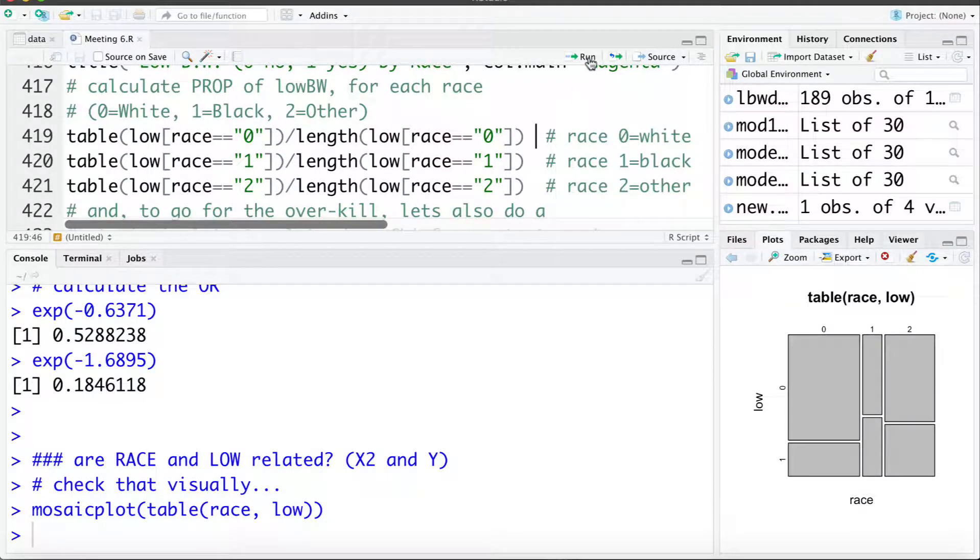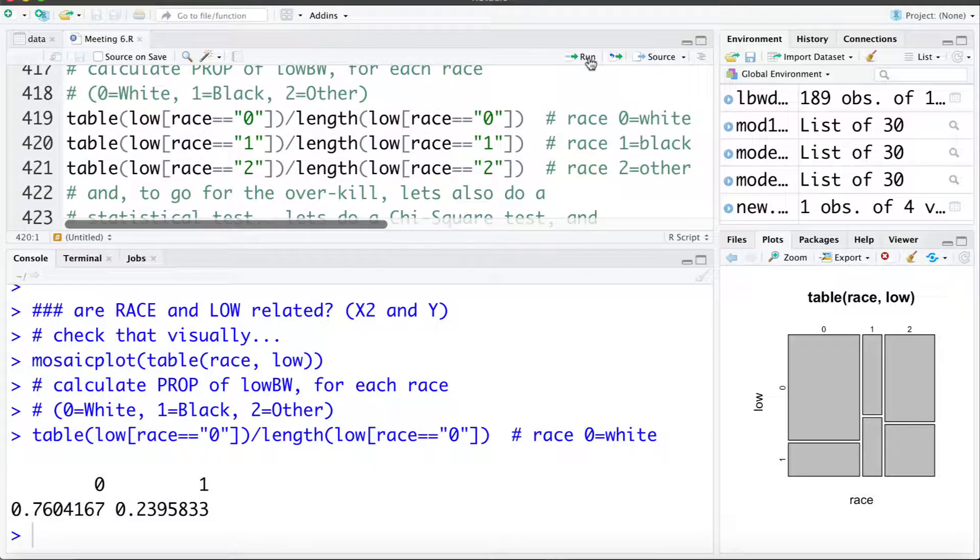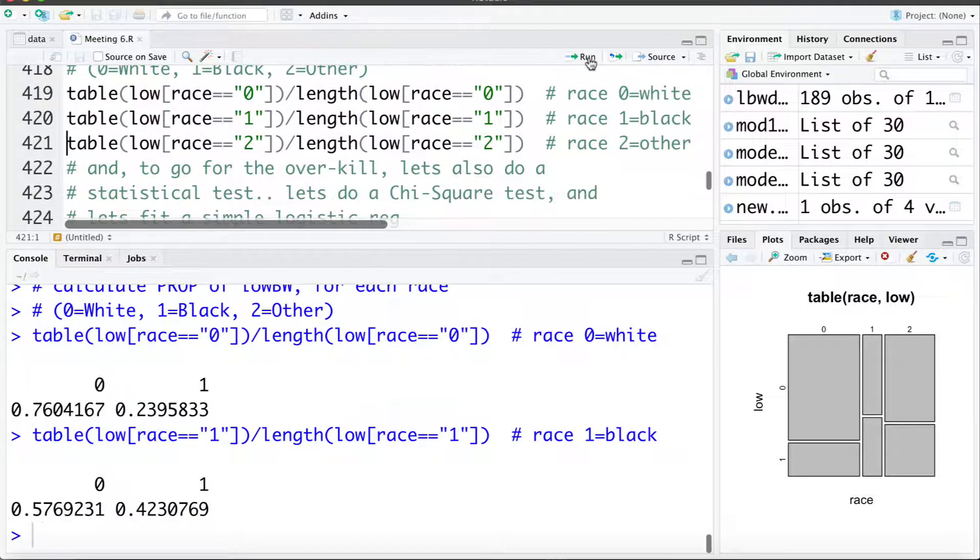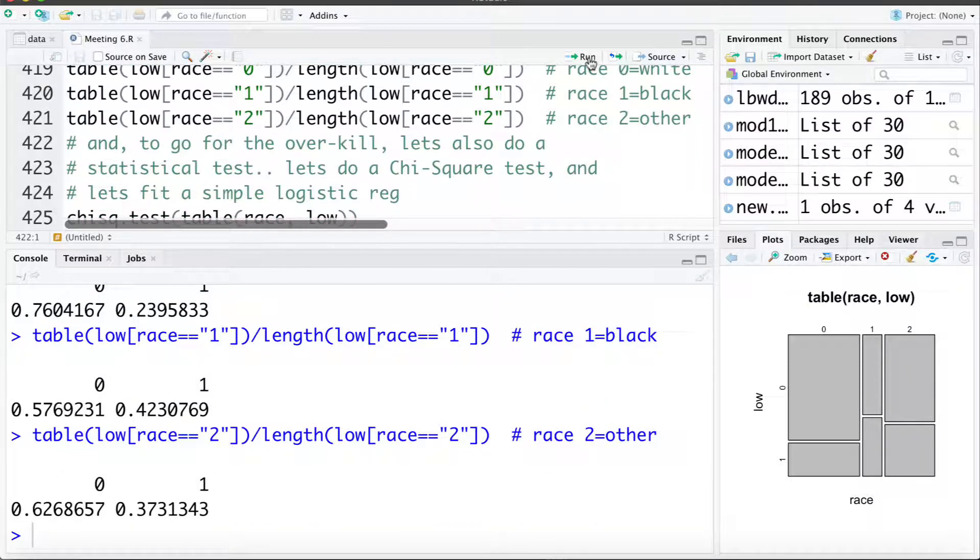We can see for white about 24% were low birth weight. For black 42% were low birth weight. And for other 37% were low birth weight.